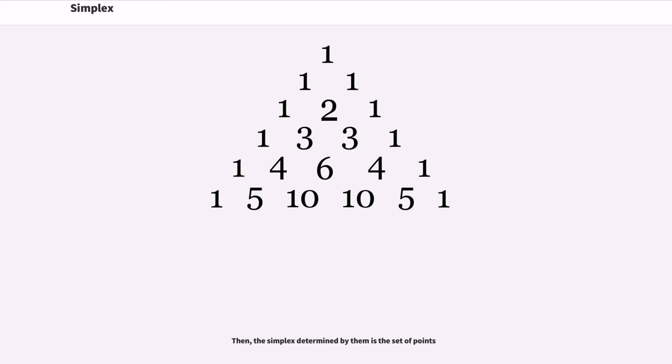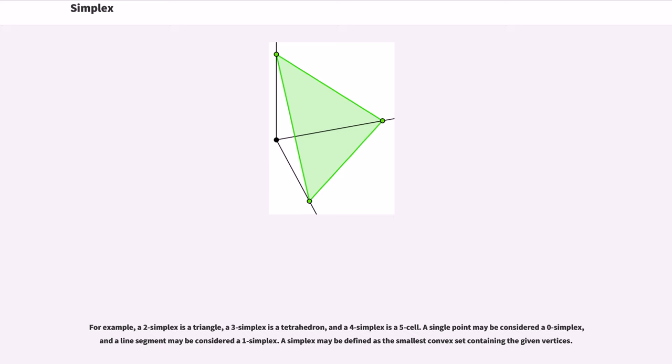Then, the simplex determined by them is the set of points. For example, a 2-simplex is a triangle, a 3-simplex is a tetrahedron, and a 4-simplex is a 5-cell. A single point may be considered a 0-simplex, and a line segment may be considered a 1-simplex.